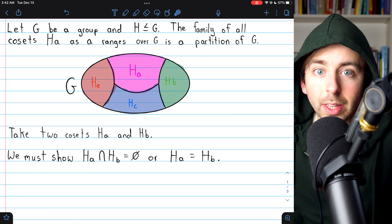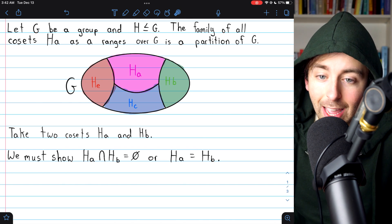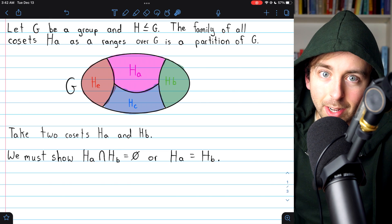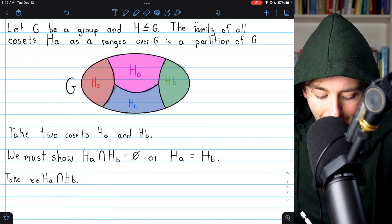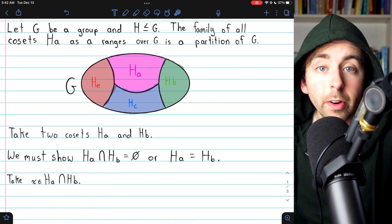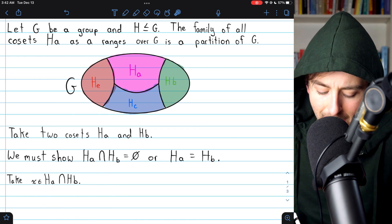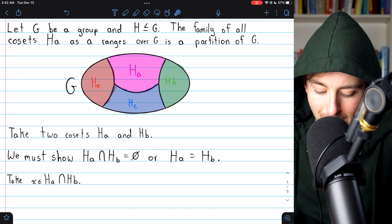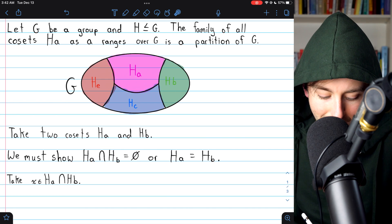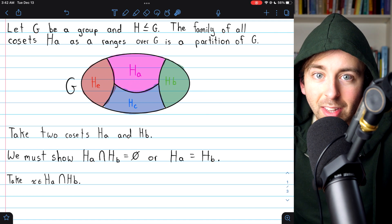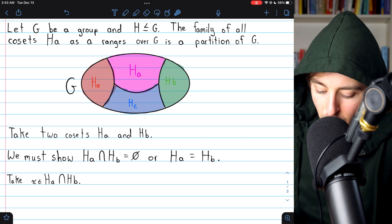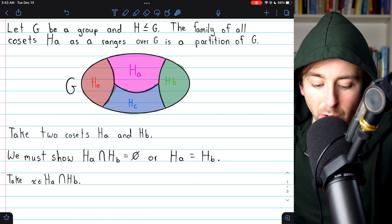Now, if we're assuming that they have some overlap, because if they're disjoint we're done, then we can take some element, say X, from their intersection. If the intersection of Ha and Hb is not the empty set, we can take some element from their intersection. Now, to make use of this element to reach our desired conclusion that Ha equals Hb,